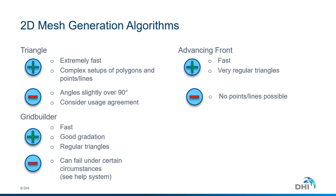For example, Triangle is an extremely fast mesh generator, which will be suitable for very complex setups of polygons, lines, and points. Advancing Front provides a very fast generation of meshes, but it has the disadvantage of not supporting points and lines.